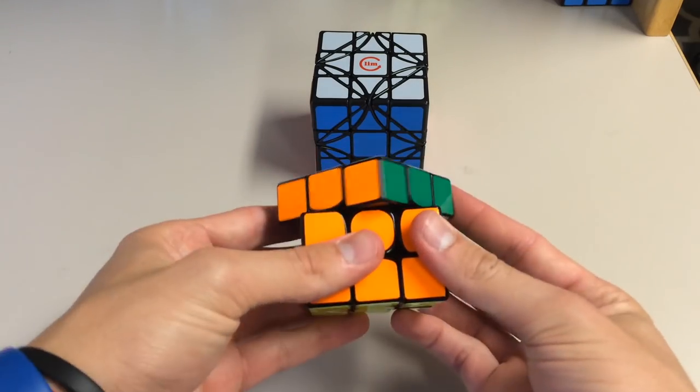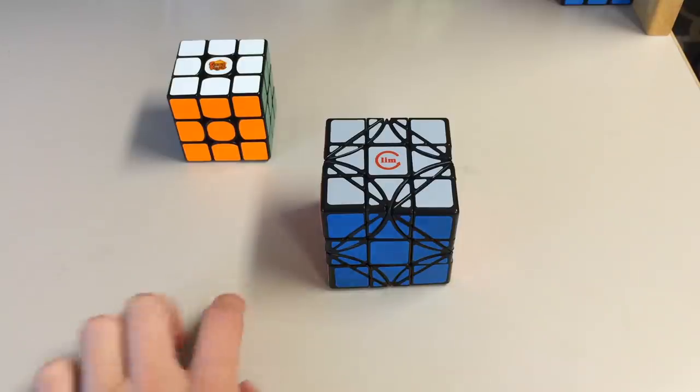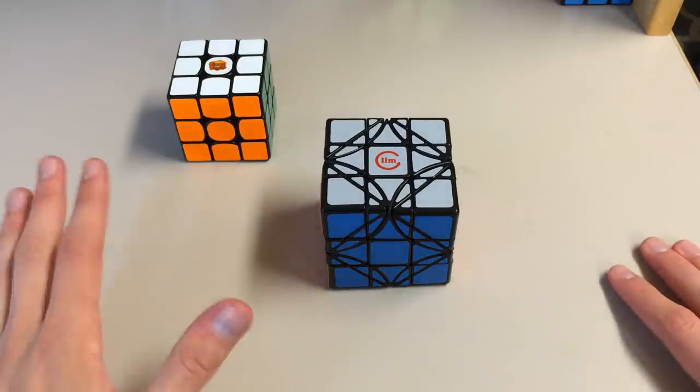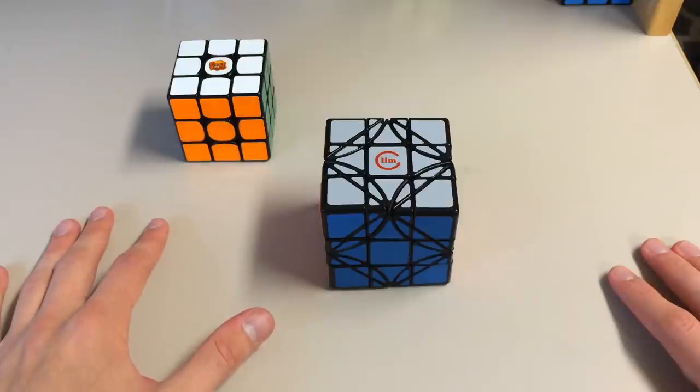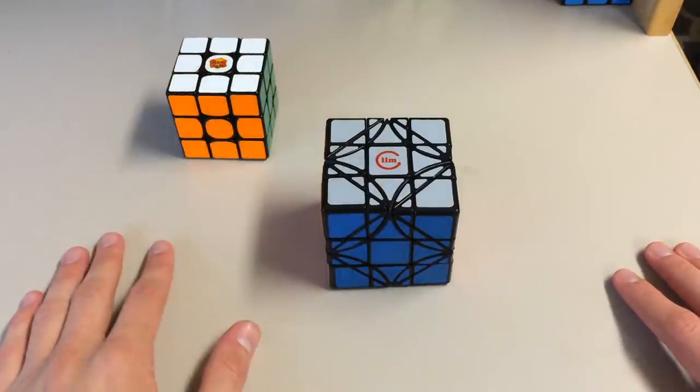So the Dreidel 3x3, I highly recommend that you guys will get it. It's about $38 or $39 on the cubicle.us. I will have a link in the description down below to where you can buy this as well as the 356 Gans.